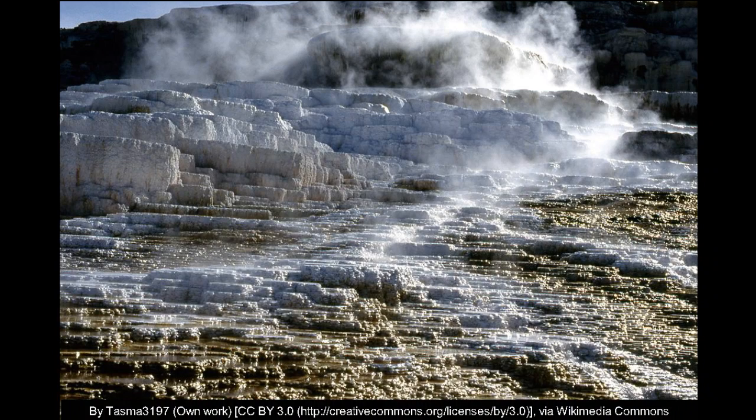Here's one place where travertine is formed: Mammoth Hot Springs in Yellowstone National Park. The banding forms as calcite crystallizes in layers when saturated groundwater flows over the surface.